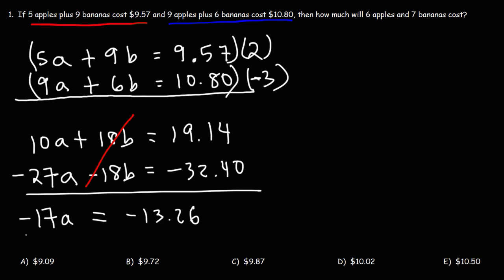Now, to get A by itself, we need to divide both sides by negative 17. So A is going to be negative 13.26 divided by negative 17. So the cost of each apple is 78 cents.